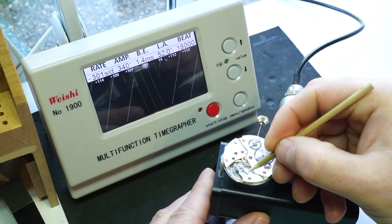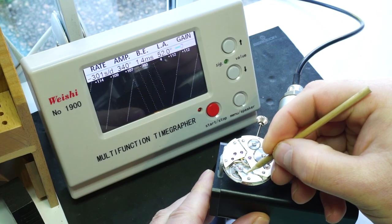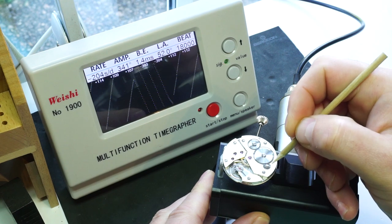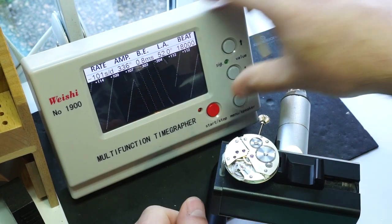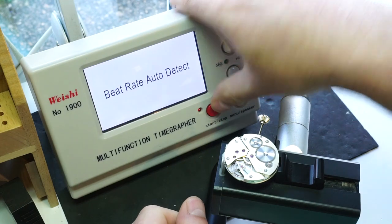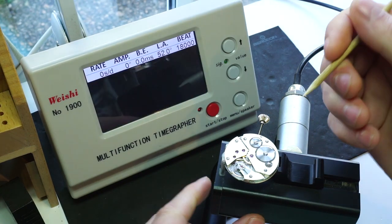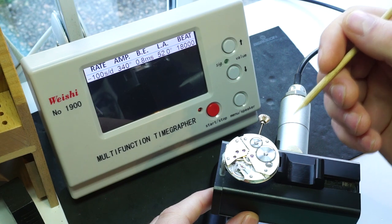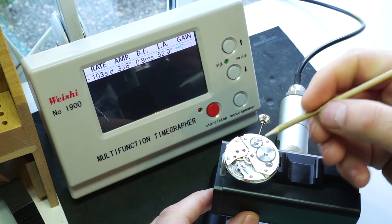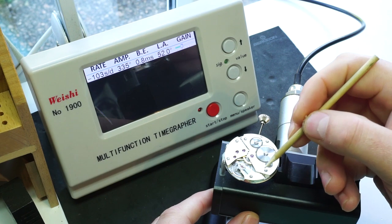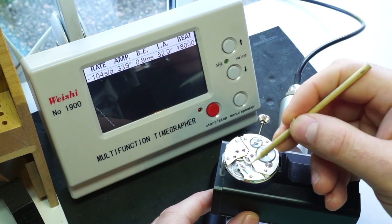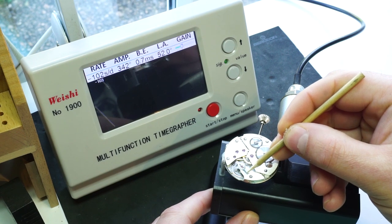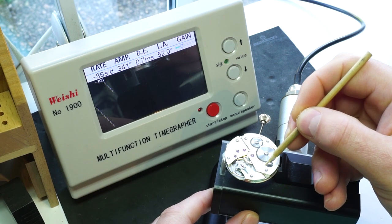We're going to start by pushing this across to the middle using a bit of pegwood so as not to scratch the balance cock. That's about the middle. I'm going to restart the timer so we can get a clear graph. The rate is still a little lower at minus 102 seconds. We want to shorten the spring a little bit more so we can increase the rate.